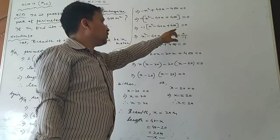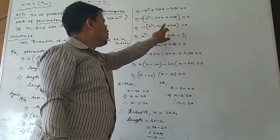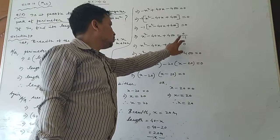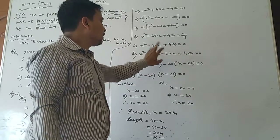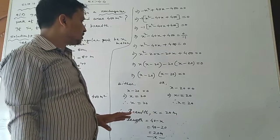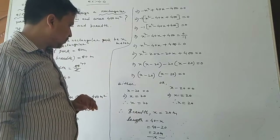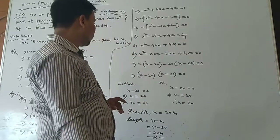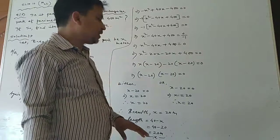Take common minus 1 from all terms, leaving x squared minus 40x plus 400 equals 0. Shift minus 1 to the right side: 0 divided by minus 1 equals 0, so x squared minus 40x plus 400 equals 0. We will apply middle term factorization method.